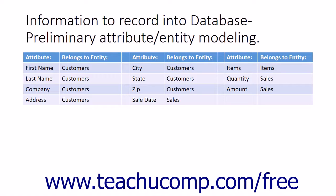For example, in the sales database example from the last lesson, the customer is an entity. Within each table created for each entity, you must only list fields or columns of information which share a one-to-one relationship with the entity or subject of that table. For example, in a customer table, you would want to place the field first name, assuming each customer only has a single first name. You would not want to place item into the customer table, as the relationship between the customer and the items purchased is one-to-many.